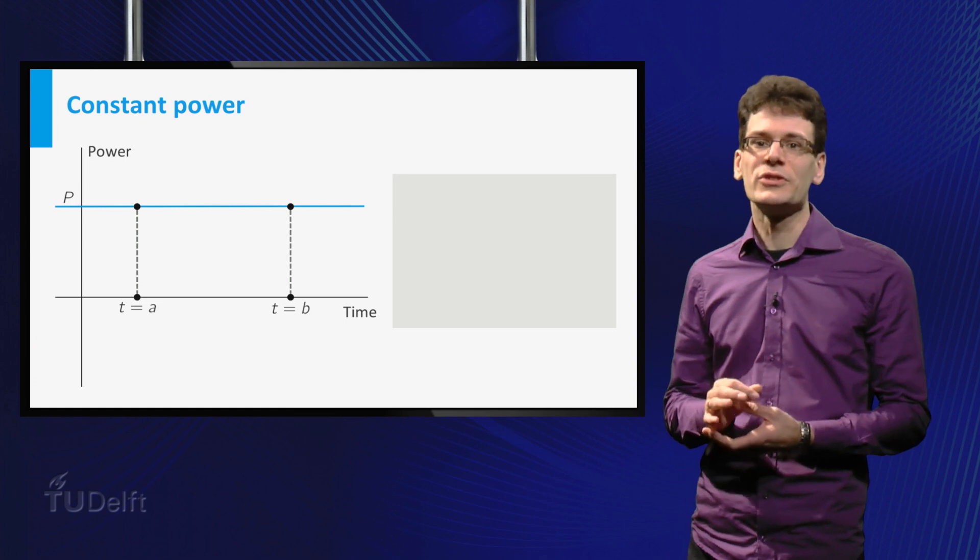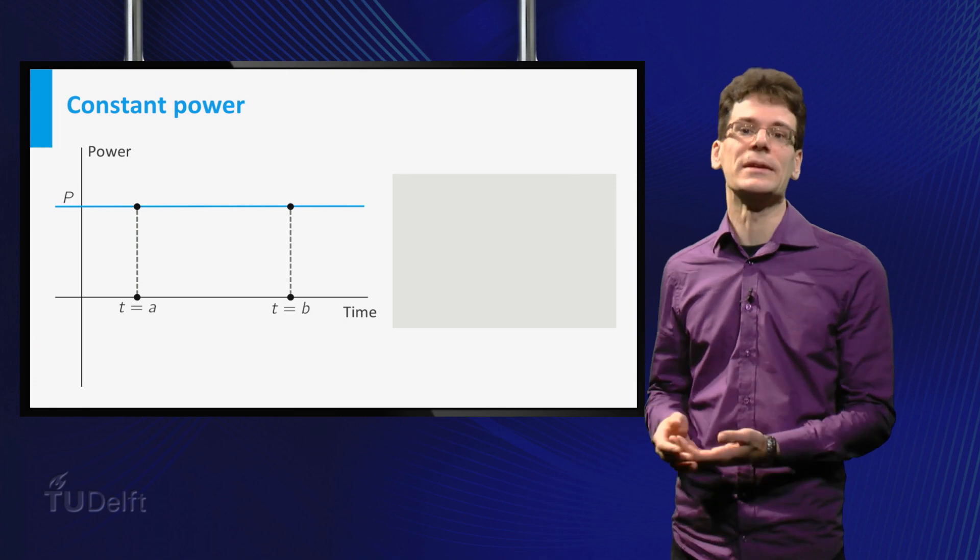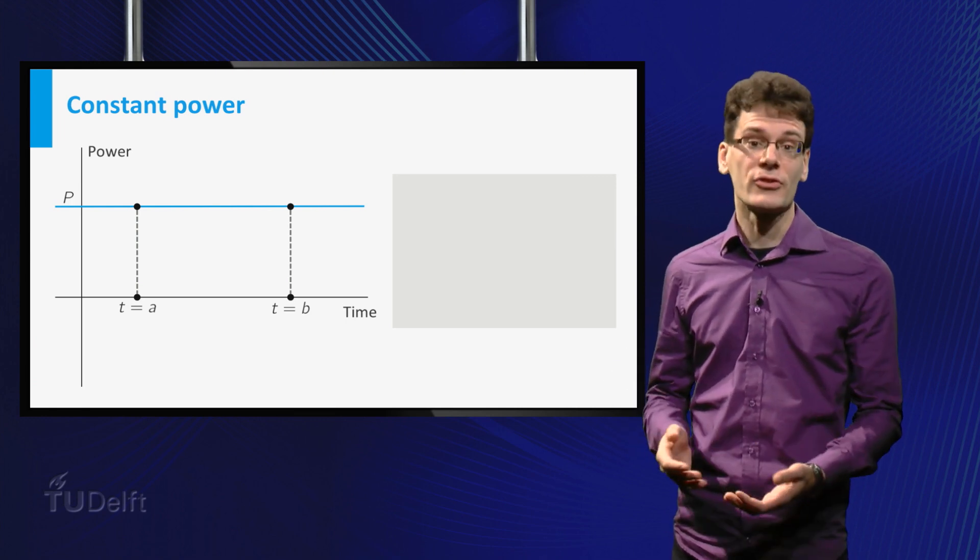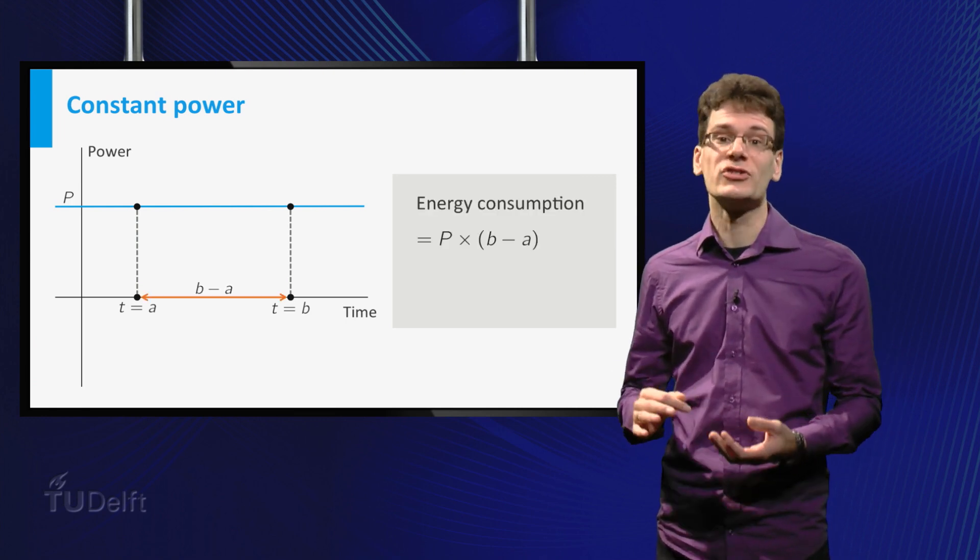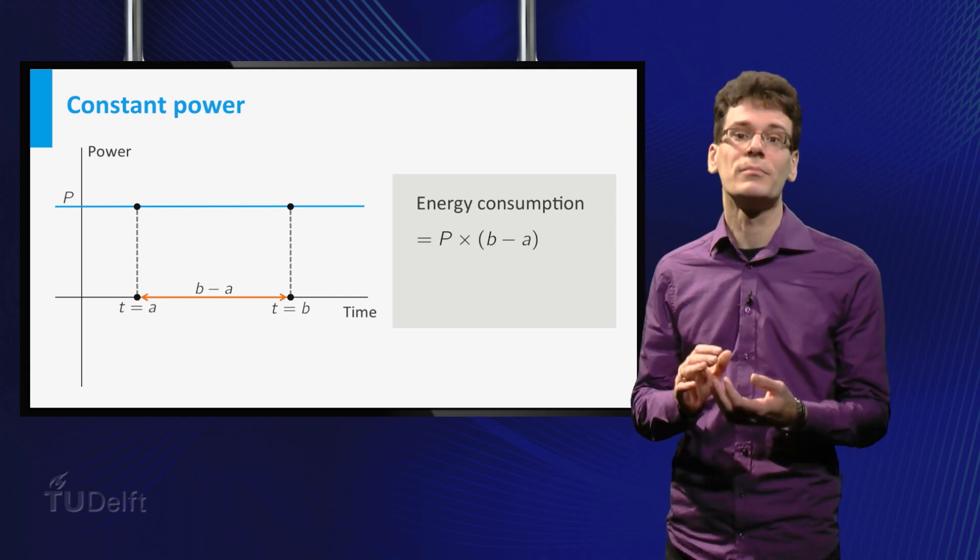Let's say we want to calculate the total energy consumption between time equal to A and time equal to B. If the power is constant during that interval, then the total energy consumption is simply the power P times the length of the interval, B minus A.